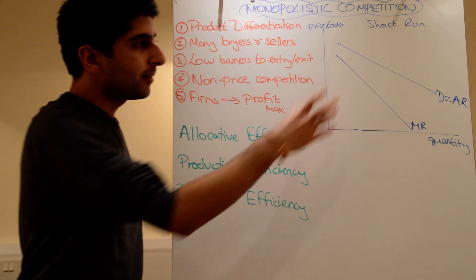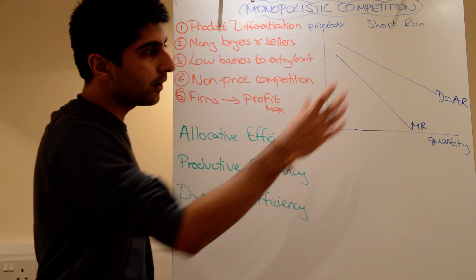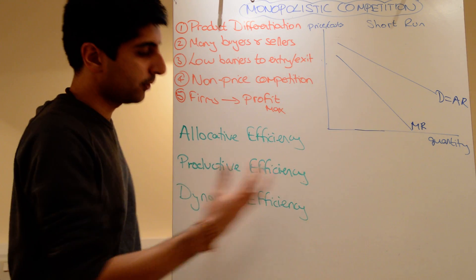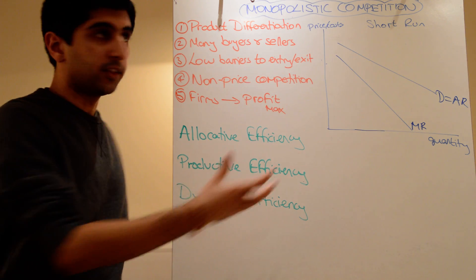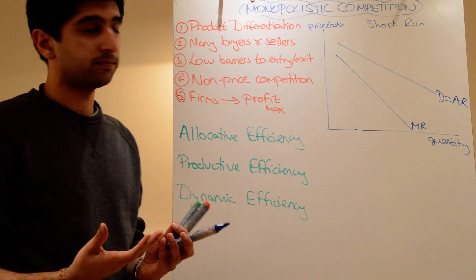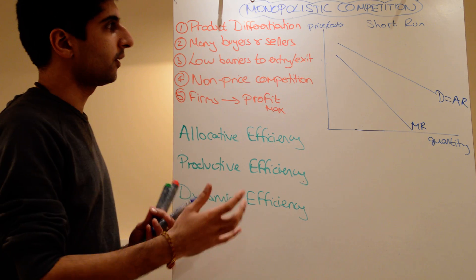The only difference between this and monopoly is that these curves are drawn slightly more elastic. Don't worry if you don't quite draw them right in an example. Just explain below that the curves are elastic, because there are still very good substitutes out there. Not perfect, but good substitutes.